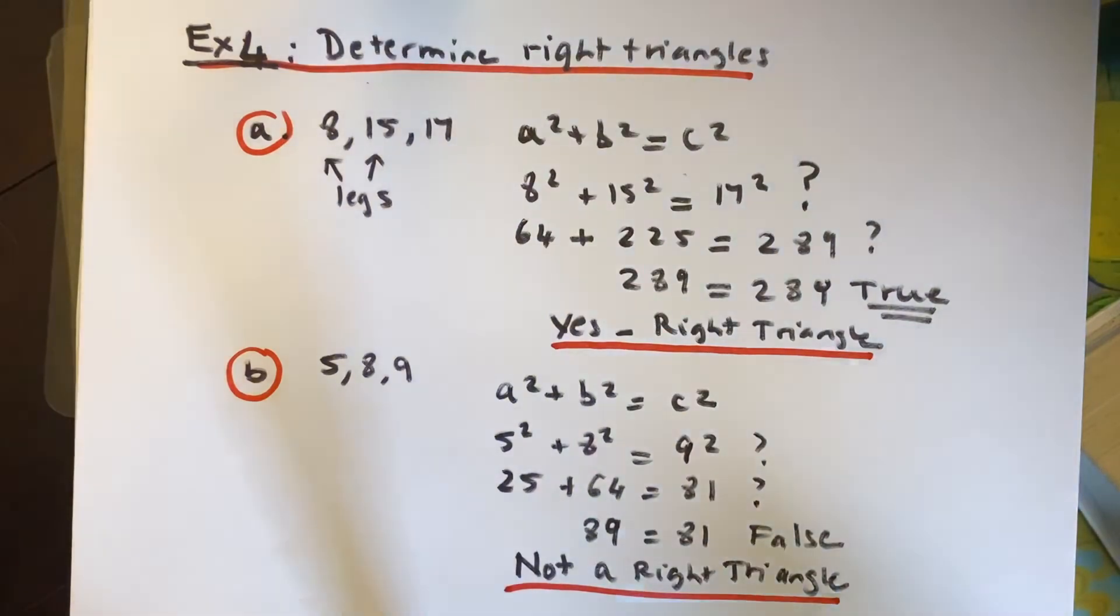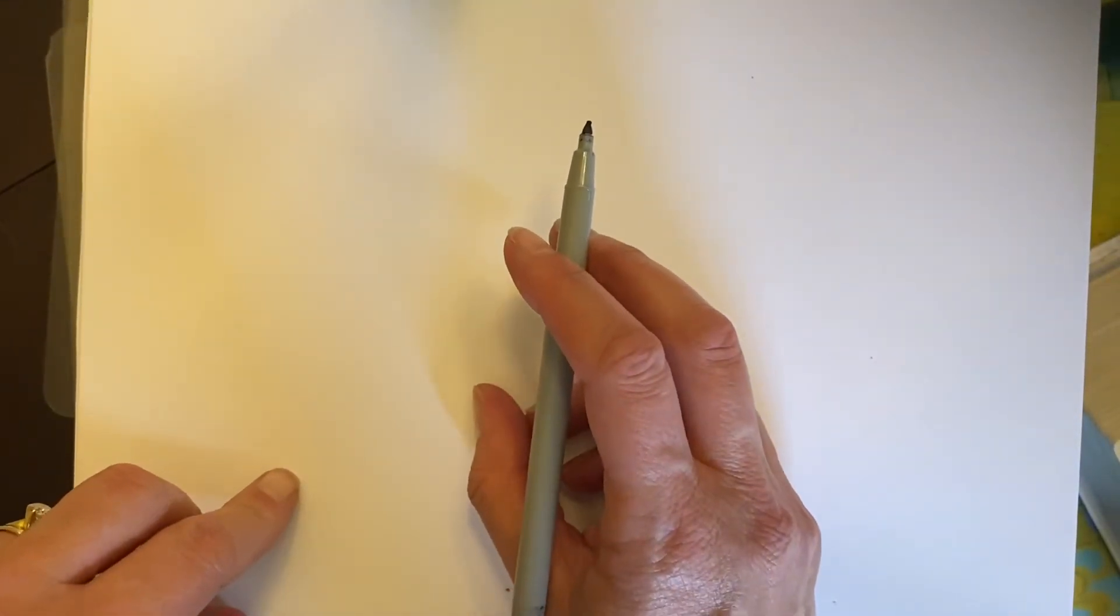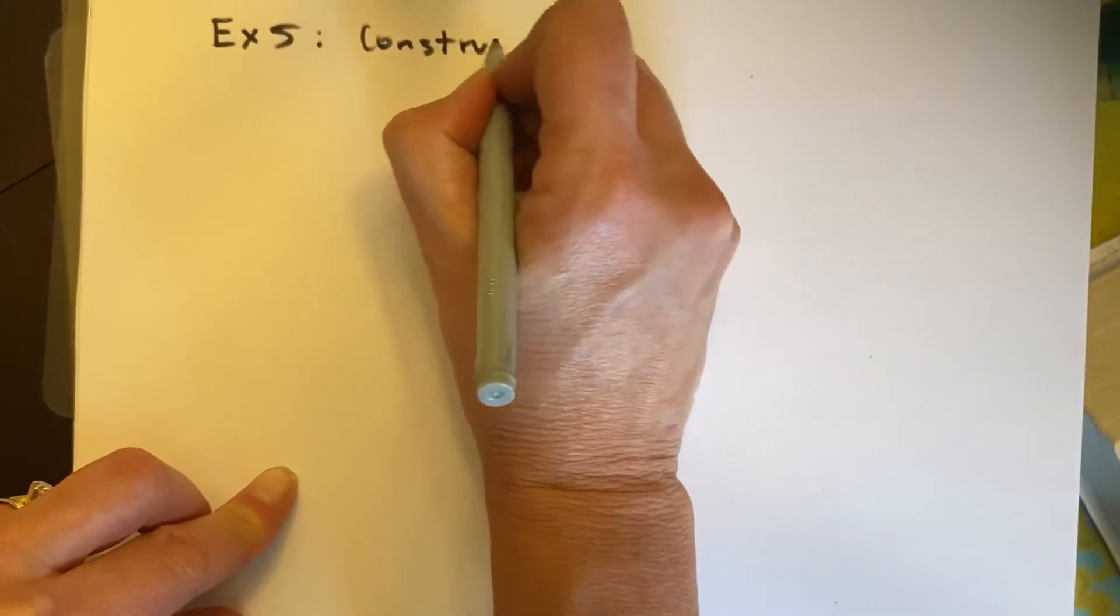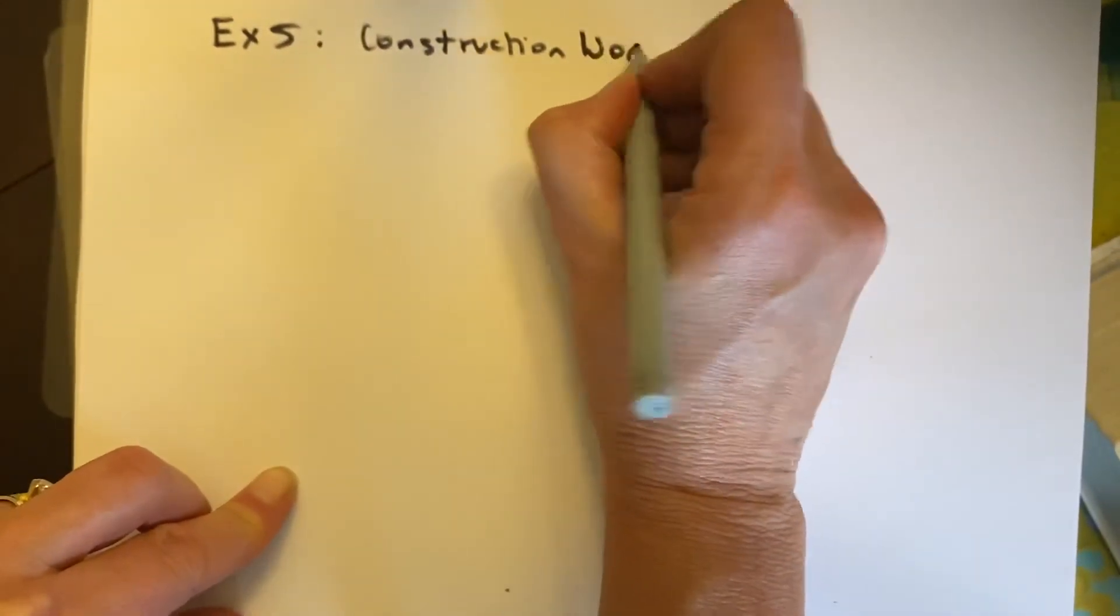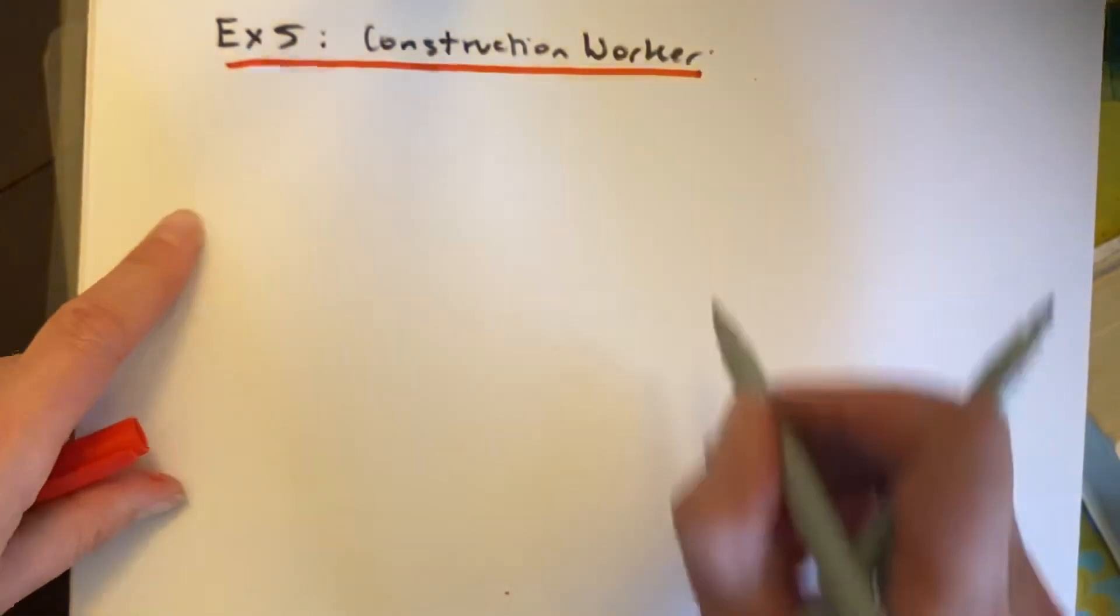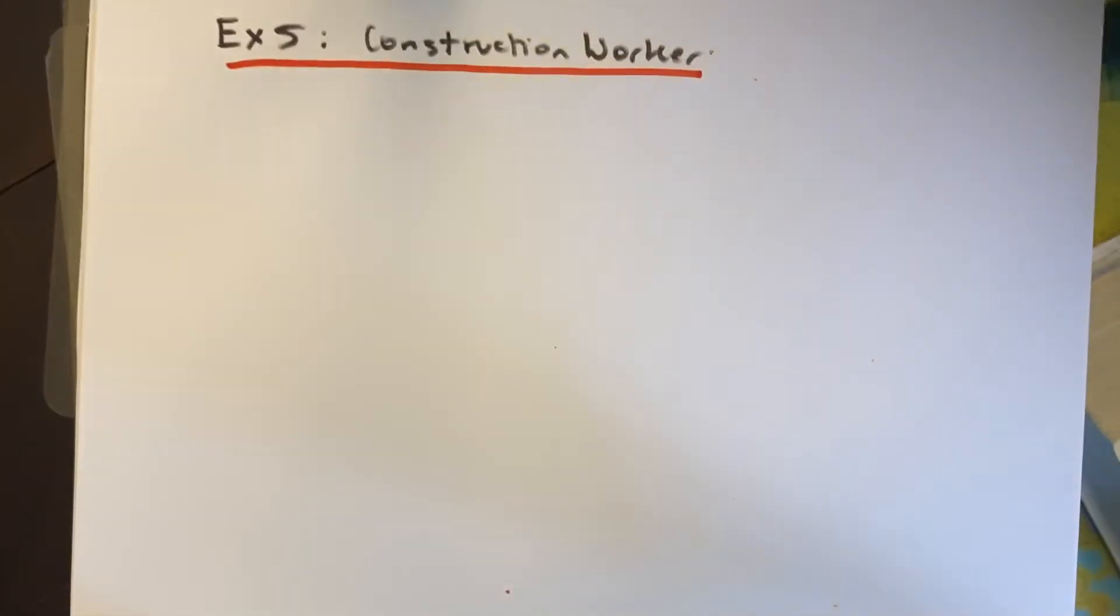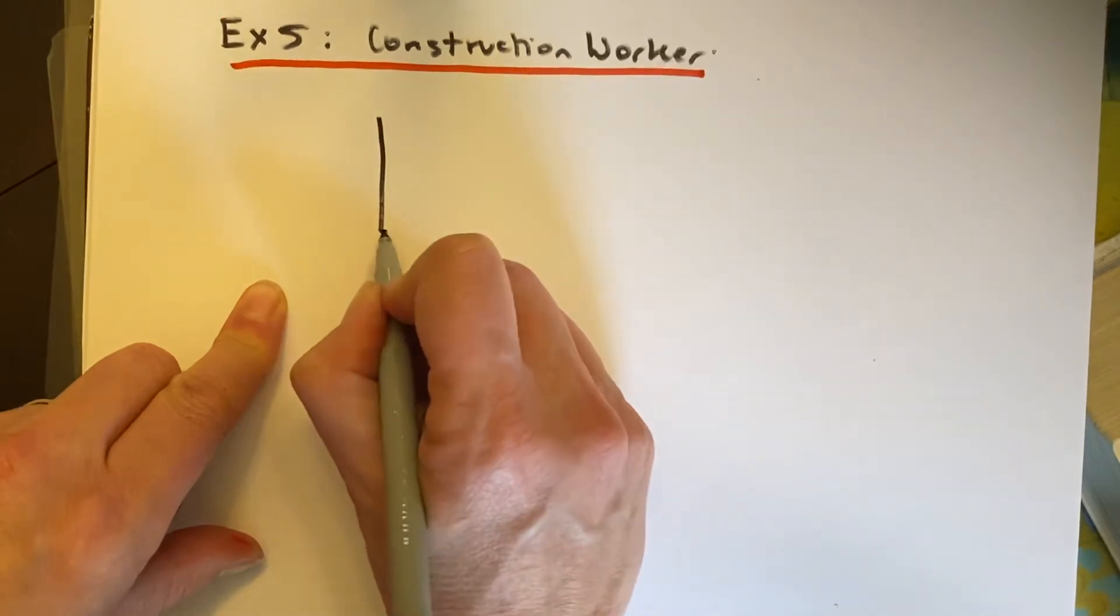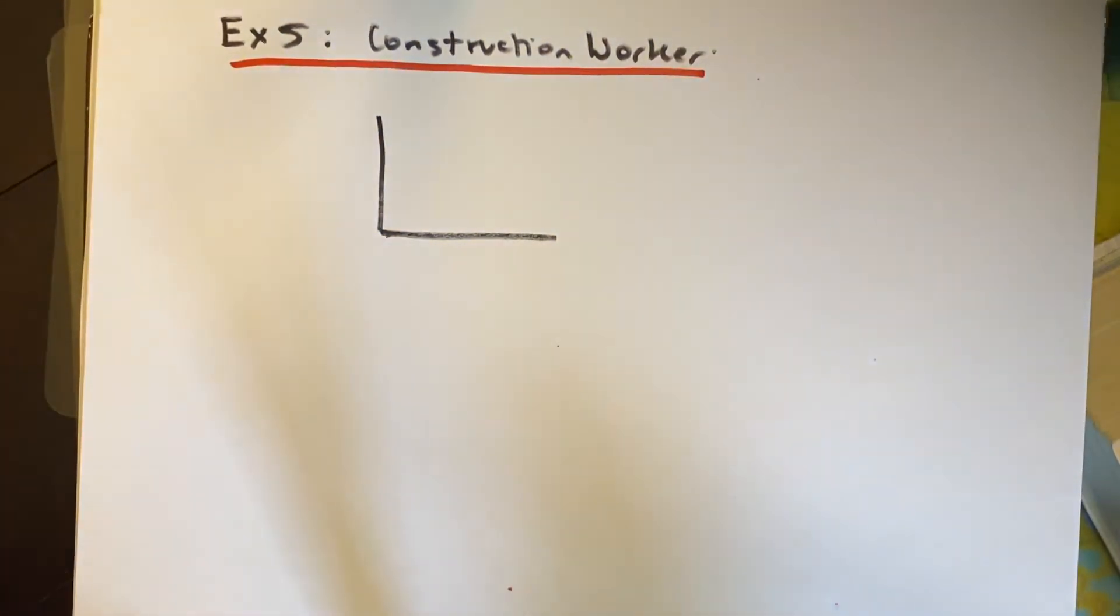All right, we are almost at the end. The last portion is just a word problem application of this principle. And I'm going to read it to you and I'm going to write it exactly the way that I would want you to do in the homework. So example 5 is the construction worker. A construction worker is making sure that one corner of the foundation of the house is a right triangle. So he's got this corner, the foundation of the house, and probably wants to do some work on it. And he just needs to know, is this a right triangle?